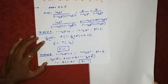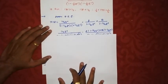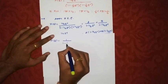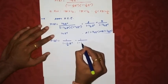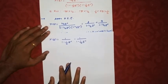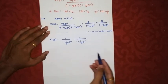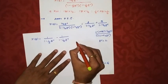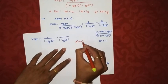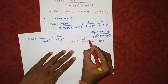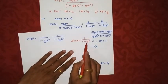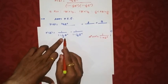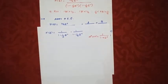Substituting A = 1 and B = −1 into the equation, we get X(z) = 1/(1 − (1/2)z⁻¹) − 1/(1 − (1/4)z⁻¹). To find the inverse Z-transform, we use the known identity: the Z-transform of aⁿ·u(n) is 1/(1 − a·z⁻¹). So the values of a here are 1/2 and 1/4.